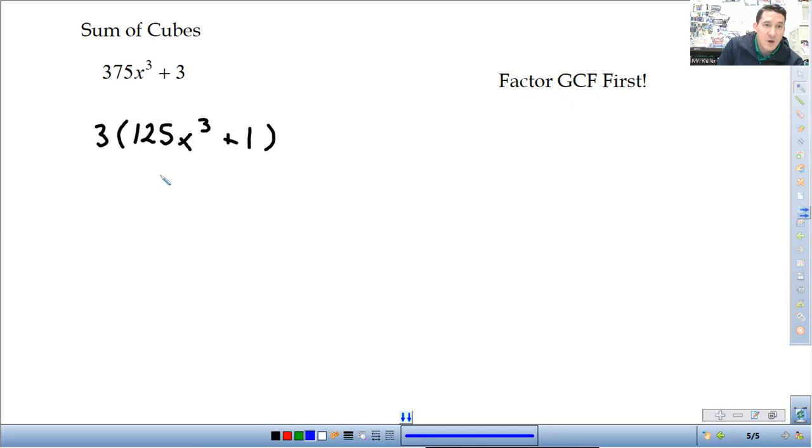So, this is a difference of cubes. Excuse me. I said difference of cubes. This is a sum. That's definitely a plus. But anyway. A cubed is 125x cubed. B cubed is 1. So, if A cubed is 125x cubed, that means A is going to be 5x. And B is going to be 1.